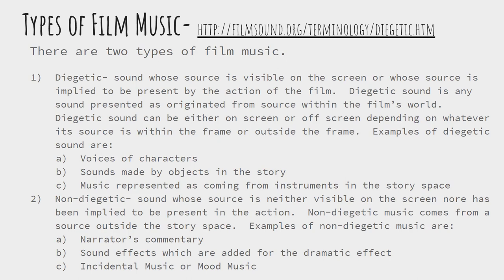So, types of film music. There are two types of film music. Diegetic — diegetic is a sound whose source is visible on the screen or whose source is implied to be present by the action of the film. Diegetic sound is any sound presented as originating from a source within the film's world. Diegetic sound can be either on screen or off screen depending on whether its source is within the frame or outside the frame.